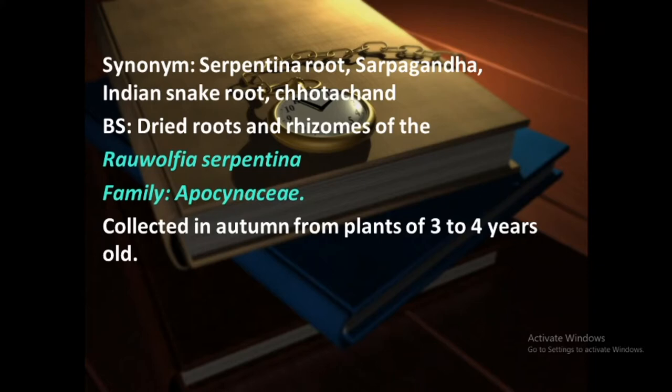It is collected from Rauwolfia serpentina plants in autumn season from plants of age three to four years. The family of Rauwolfia is Apocynaceae. We have also studied an alkaloidal containing drug, that is Vinca, which is Catharanthus roseus — this Catharanthus roseus also has family Apocynaceae, and Rauwolfia serpentina also has family Apocynaceae. This is a most important point.